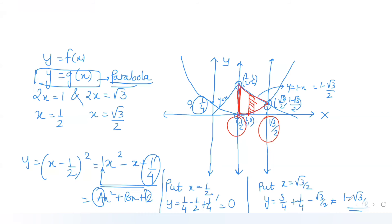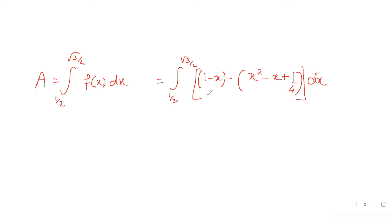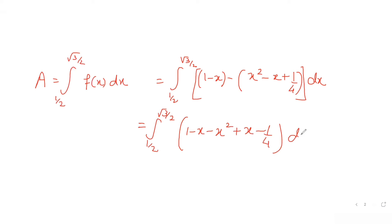The integrand is the straight line equation minus the parabola equation. The straight line here is y = 1 - x, and the parabola is x² - x + 1/4. So the area equals the integral from 1/2 to √3/2 of (1 - x) - (x² - x + 1/4) dx.